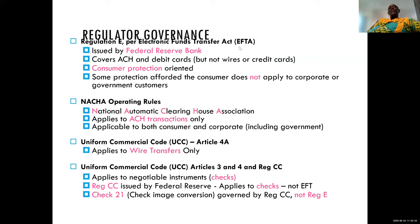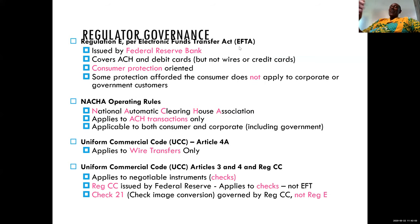The National Automated Clearinghouse Association — Ghana has established one — applies to ACH transactions only and is applicable to both consumer and corporate banking. In the US there is also the Uniform Commercial Code, which applies to wire transfers only — specifically UCC Article dealing with negotiable instruments. So there is a whole body of regulations and acts governing how these things are done, and within the Bank of Ghana Act we will find some of these things embedded, giving the central bank the authority to carry out these functions.